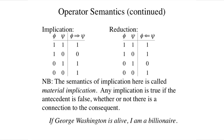Consider the sentence: if George Washington is alive, I am a billionaire. In the real world, this sentence is true given our semantics, since George Washington is not alive. This feels wrong to some people because the antecedent seems to have nothing to do with the consequent. The good news is that, other than this slight oddity, everything works out very nicely with the semantics, as we shall see.